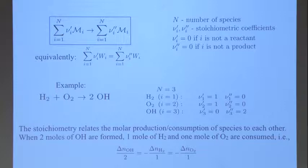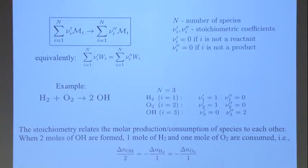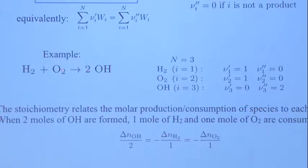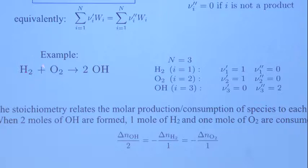If you replace the symbol by a molecular weight, then this is a statement that you have balanced all atoms — essentially mass conservation. So the sum on the left equals the sum on the right. Here is an example: H2 plus O2 gives 2OH. I chose this specific reaction because, as we will see in a minute, there are many things we write here which are only true for elementary reactions. There are three species — H2, O2, OH — so N equals 3. Nu1 prime is 1, nu2 prime is 1, but nu3 prime is 0 because OH is not a reactant. The double prime of species 1 and 2 is 0 because they are not products.